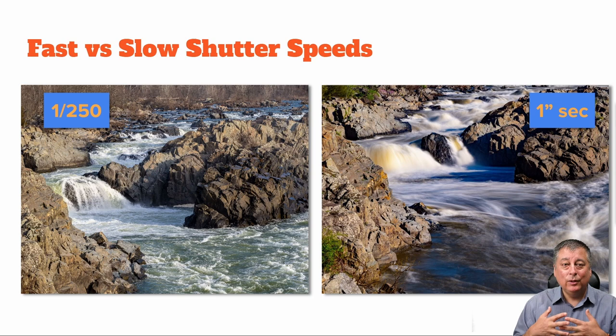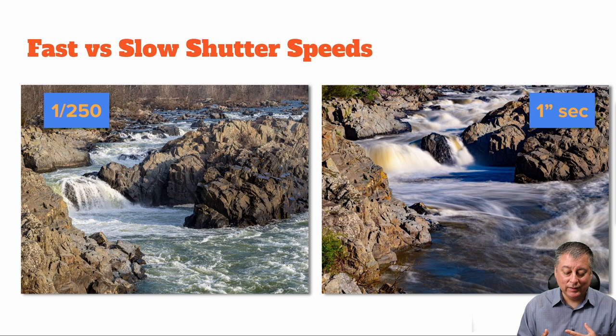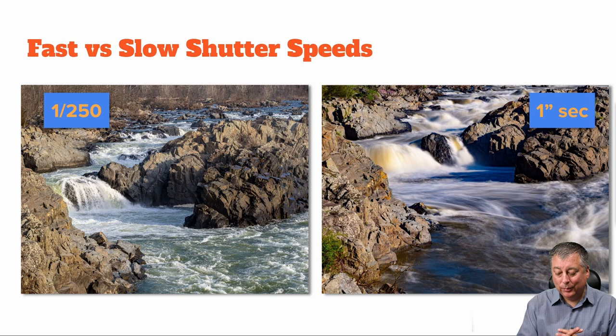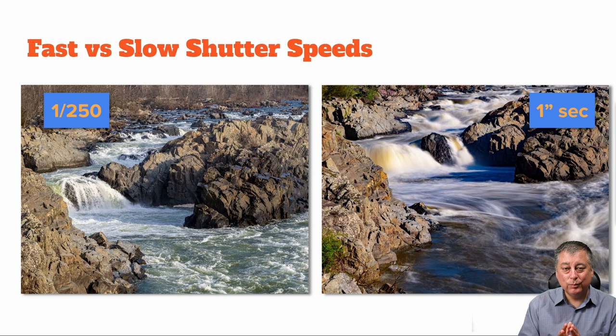Now let's talk about shutter speeds and the impact they have on your images, focusing on subject motion. I've taken the same scene at different shutter speeds. On the left, at a relatively fast 1/1250 of a second, you can see the water is frozen as it flows through the rocks — you'd see little water droplets and mist if you zoomed in. But if you want to be creative, you can reduce your shutter speed down to one second and see the water flowing, giving a sense of motion through the rocks.